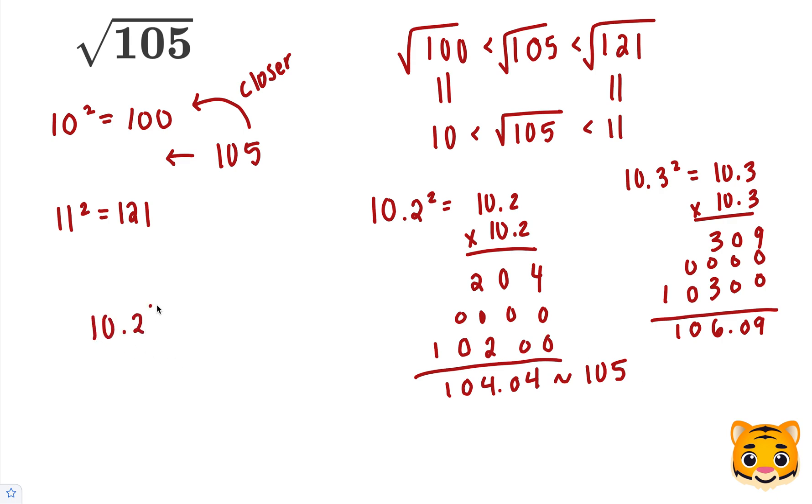So 10.2 squared gives us approximately 105. Now we can take the square root of both of these values. The squared and the square root cancel, so we get 10.2 is approximately the square root of 105. And this will be our approximated answer.